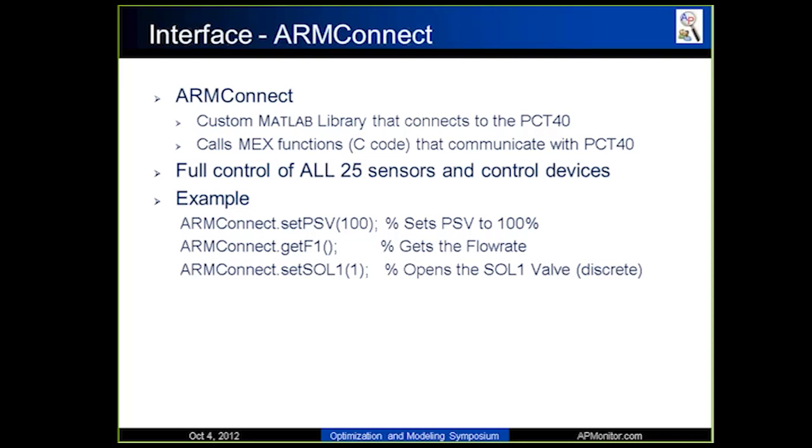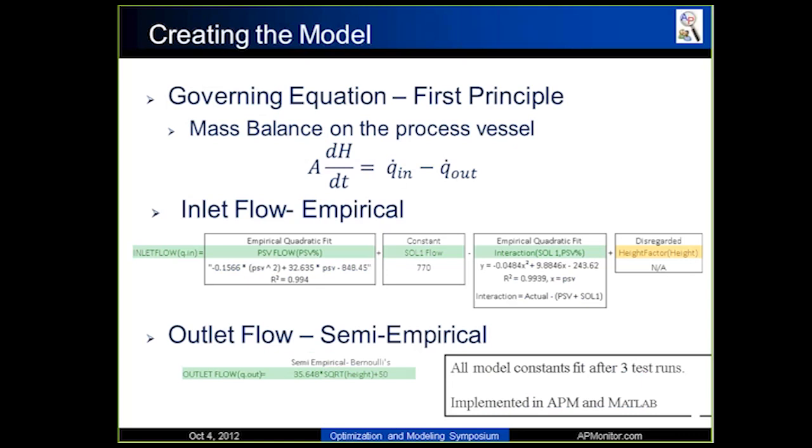So the first thing we need to do is to create a model because this is model predictive control. The governing equation of the model is just a simple mass balance. So as you can see here, it's just a simple mass balance: dH/dt = Q_in - Q_out. It is a first principle model.